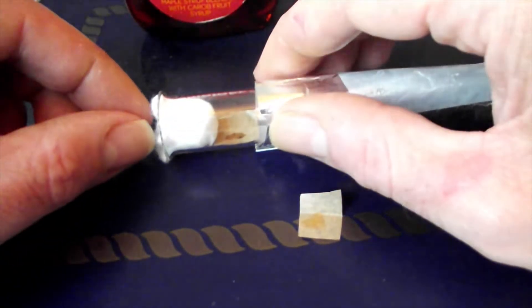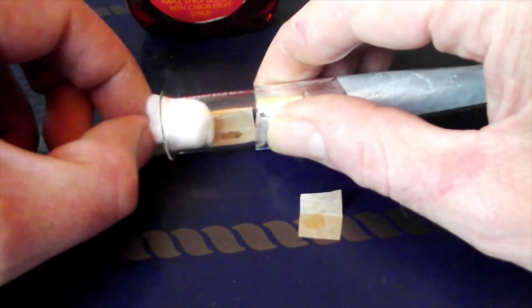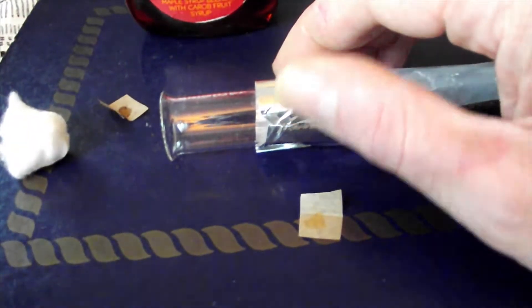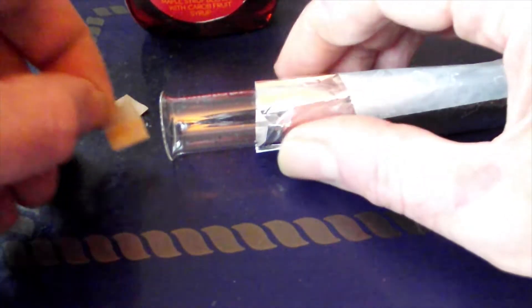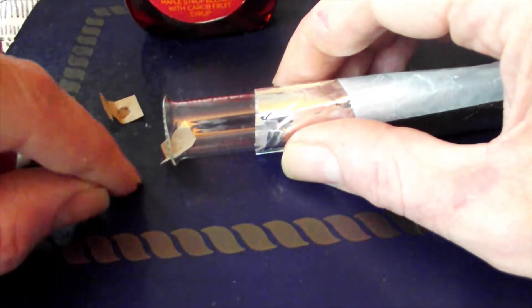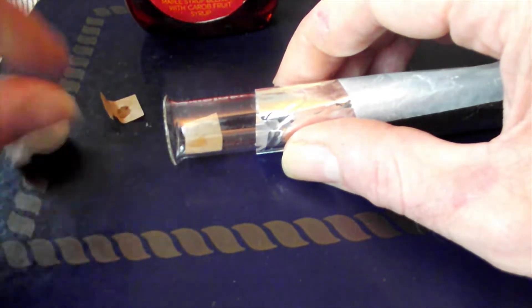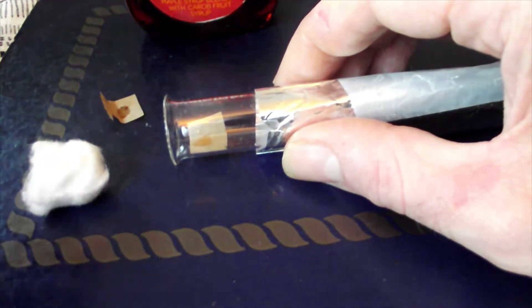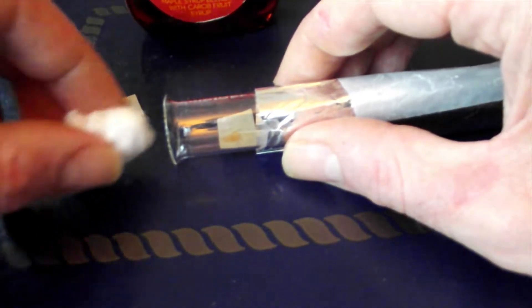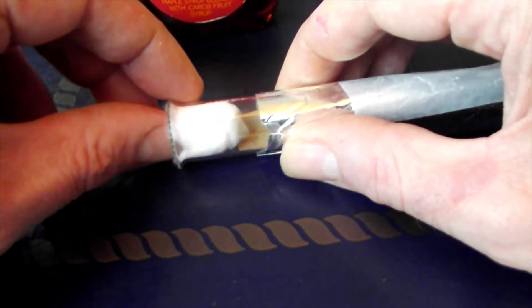Now there's one in there already. Lasius niger do like to dump their rubbish into the maple syrup. That's what you can see the little black bits in it. Take that out. Pop the new one in. The worker actually runs down here and tries to get to the sugar almost immediately. But as soon as I start prodding it, she soon changes her mind and runs back.